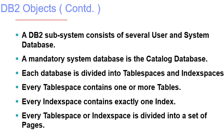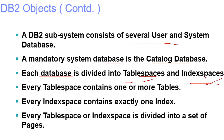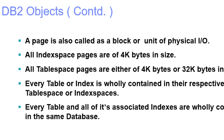A DB2 subsystem consists of several user and system databases, plus a mandatory system database called the catalog database, or DSNDB06. Each database is divided into table spaces and index spaces. A table space contains one or more tables; an index space contains exactly one index. Every table space and index space is divided into a set of pages, also called blocks or units of physical I/O.